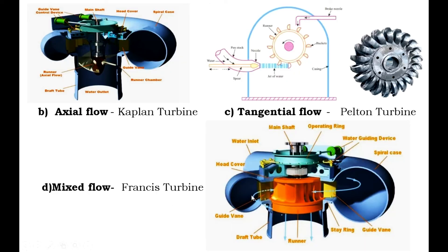The next type of turbine is the mixed flow turbine — the example is the Francis turbine. It is an inward flow radial type reaction turbine that operates under a medium head. The Francis turbine consists of a spiral casing, fixed guide blades, runner, moving blades, and a draft tube. The spiral casing includes a number of stationary guide blades fixed around the circumference of an inner ring of moving blades. Water at high pressure from the penstock pipe enters the inlet in the spiral casing and flows inward to the outer periphery of the runner through the guide blades.